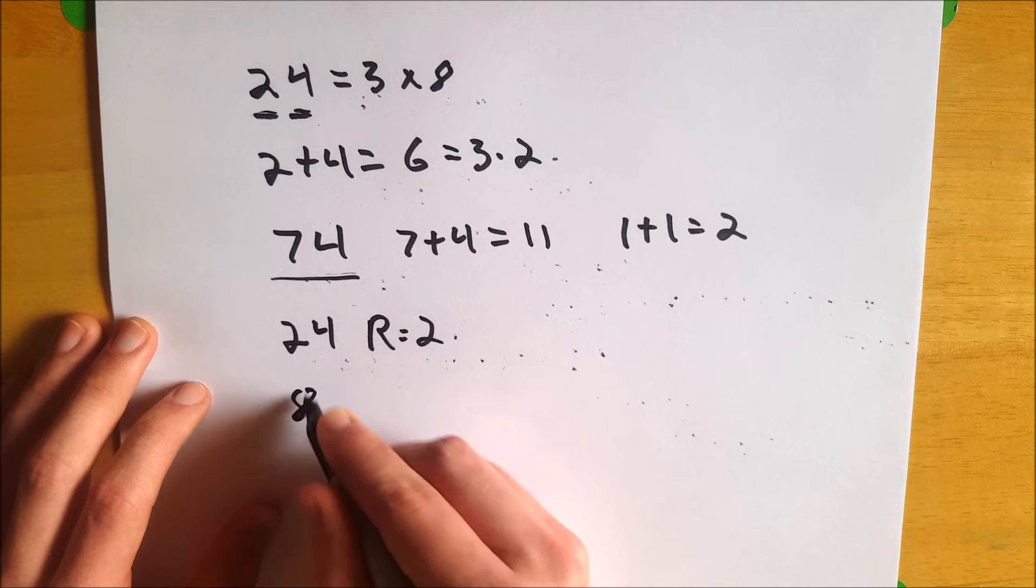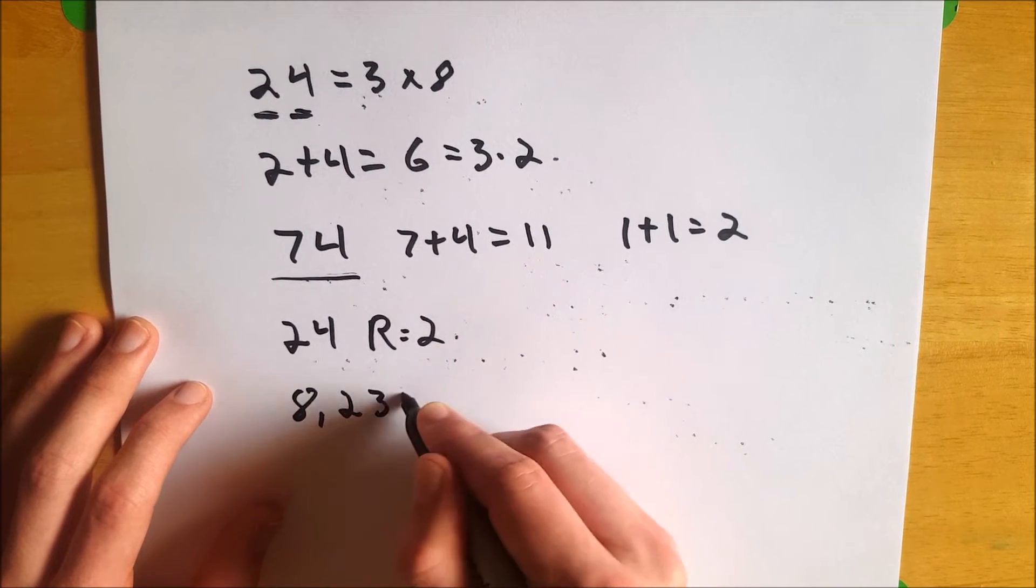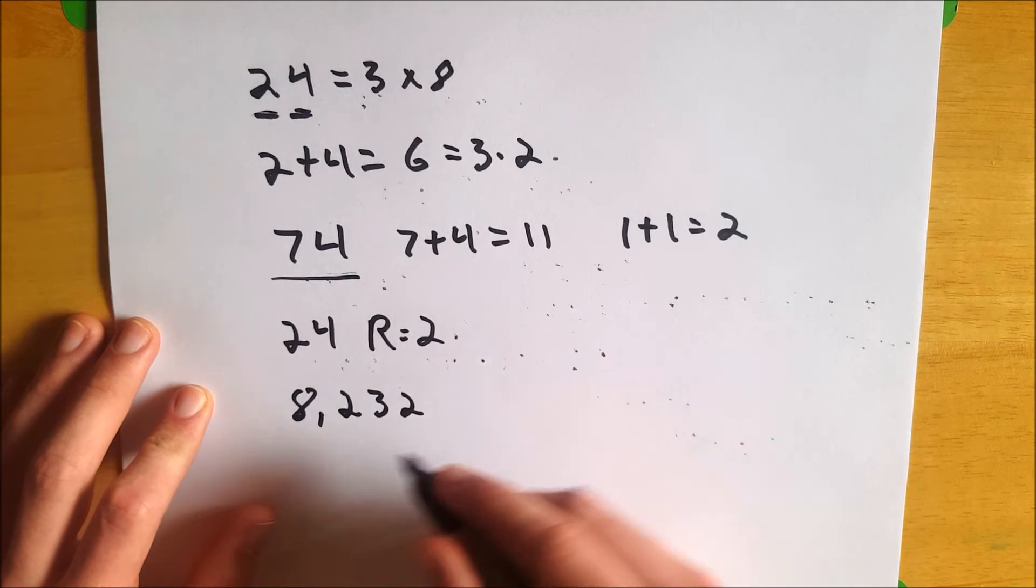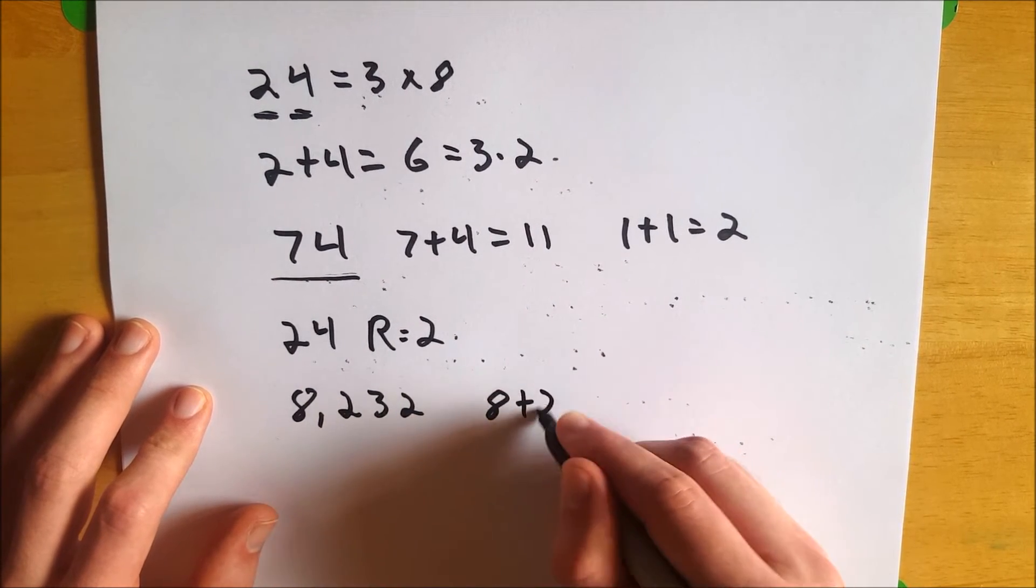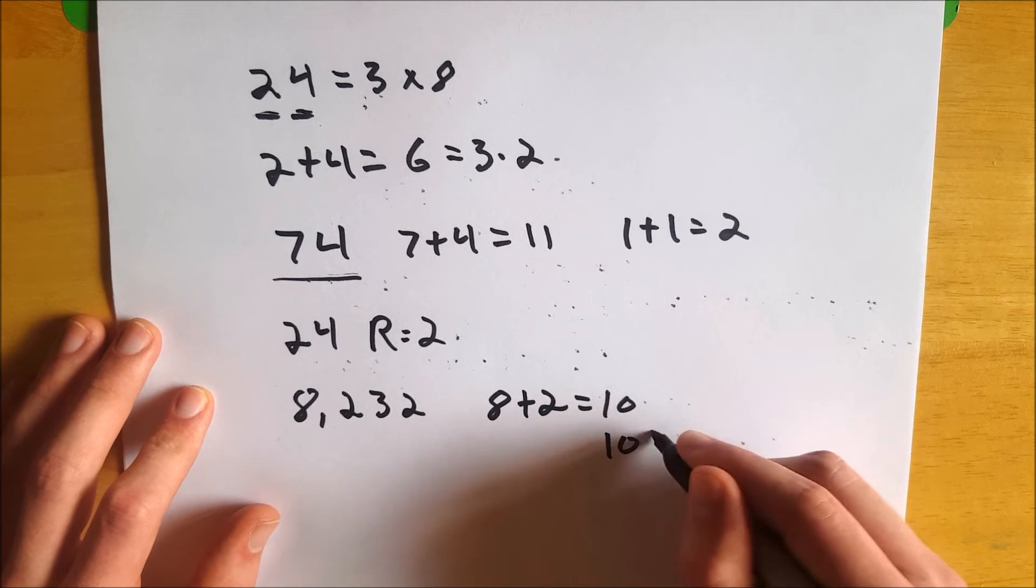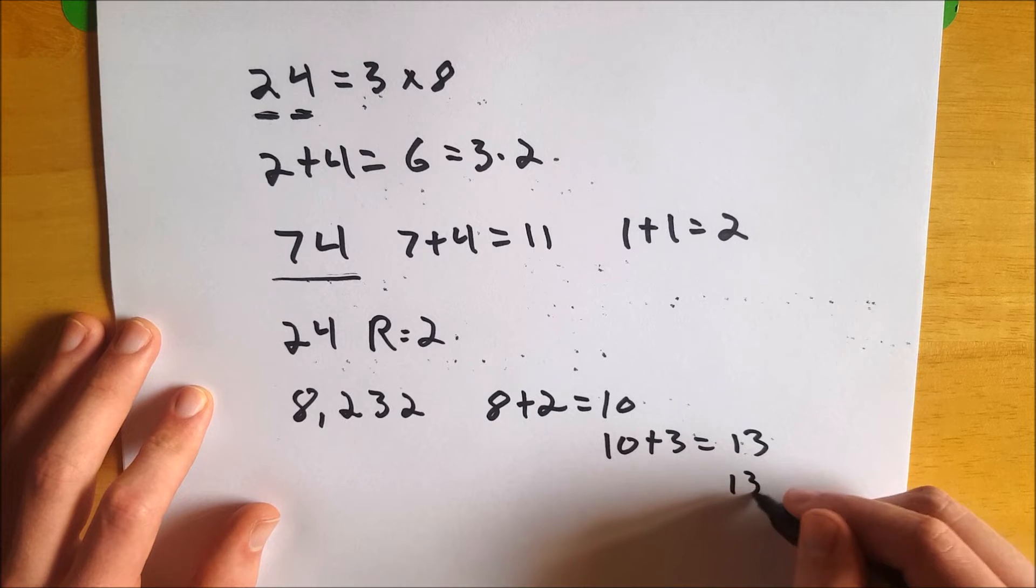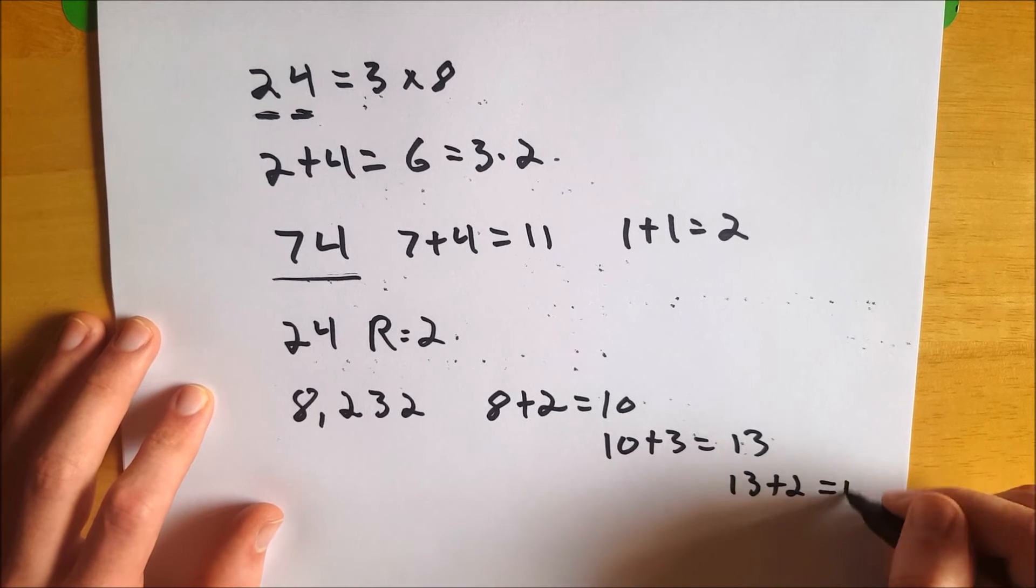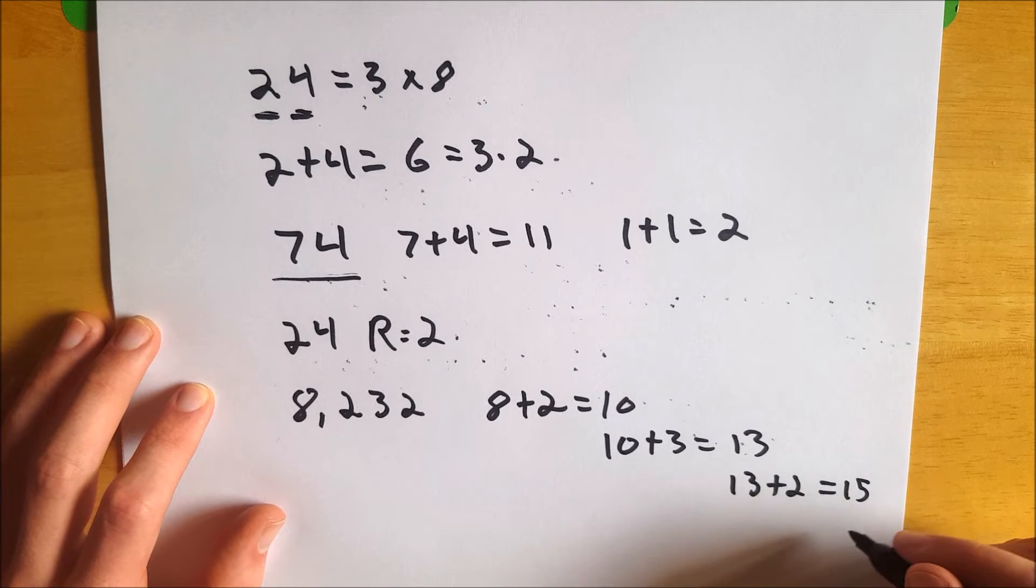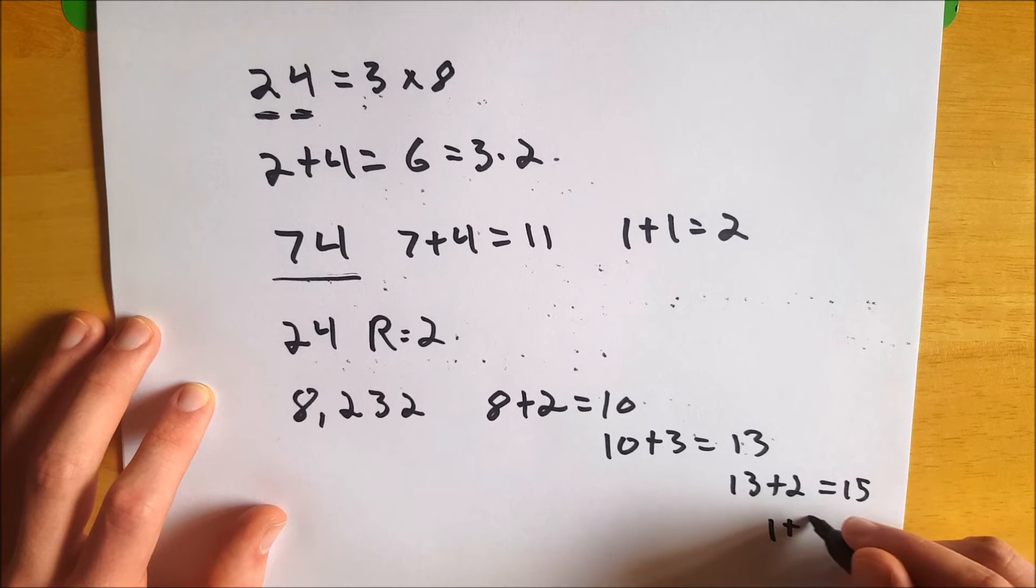Let's look at one other one. How about 8,232? Add these digits up. 8 plus 2 equals 10. 10 plus 3 equals 13. 13 plus 2 equals 15. 1 plus 5 equals 6.